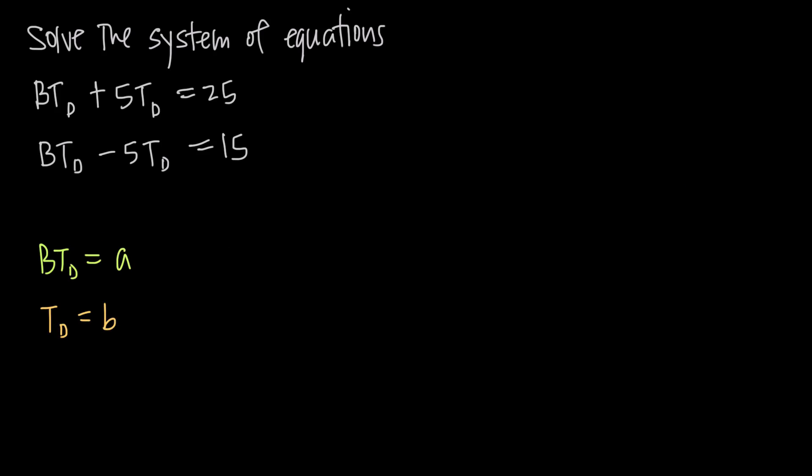If that were the case, you could go ahead and rewrite these equations. BT sub D would give you A, and then you'd say plus we have 5T sub D, so 5 times T sub D, which we know is B.